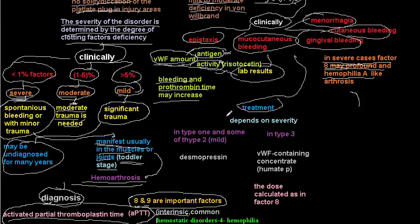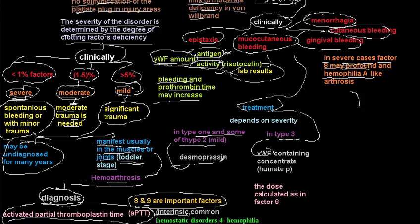What is the treatment of von Willebrand disease? Most of you will say we treat it by giving von Willebrand factor — this is correct, but not for mild or moderate cases. In mild and moderate cases we give desmopressin, just like in mild and moderate hemophilia cases as mentioned in the previous video. In severe cases we give von Willebrand factor concentrate.